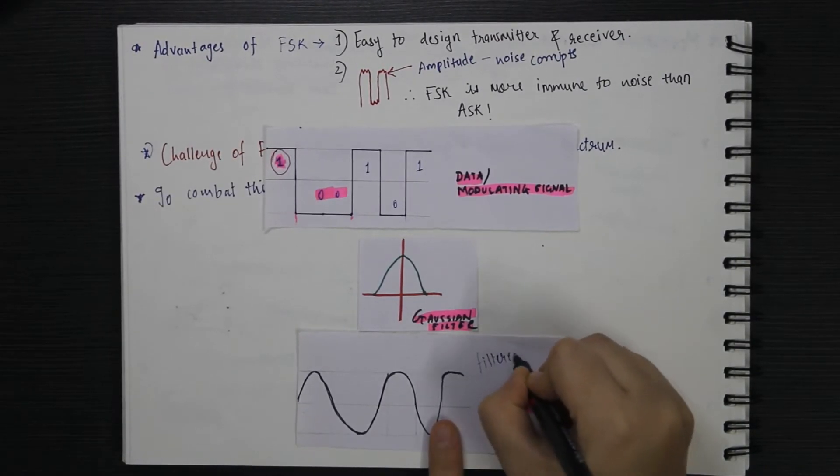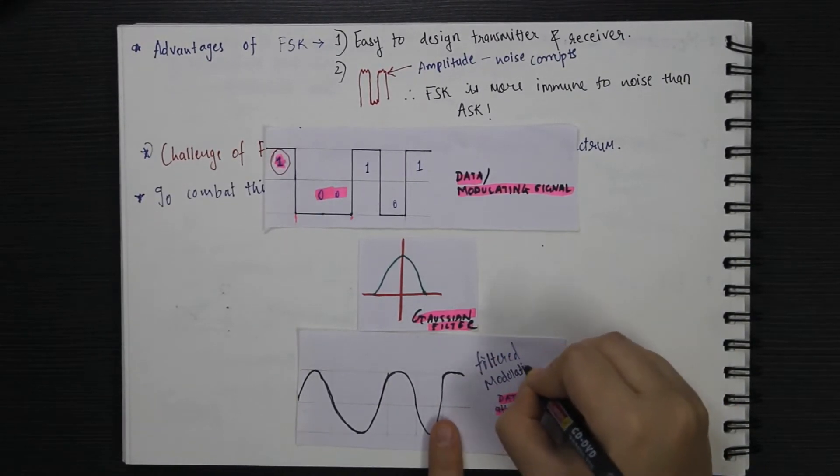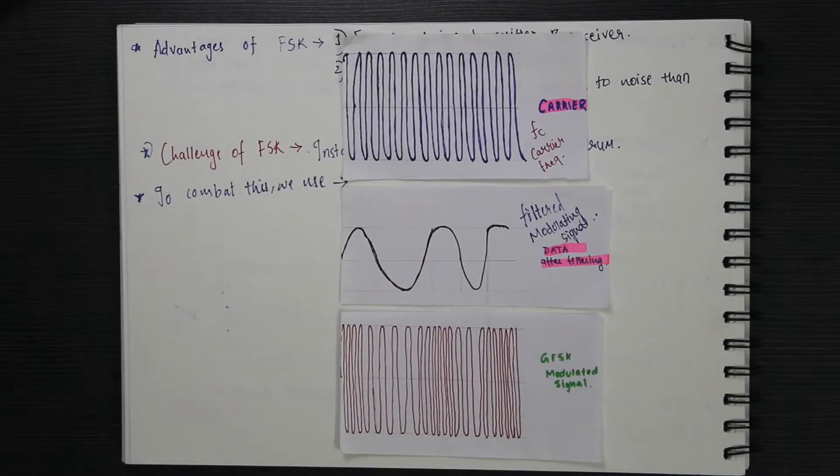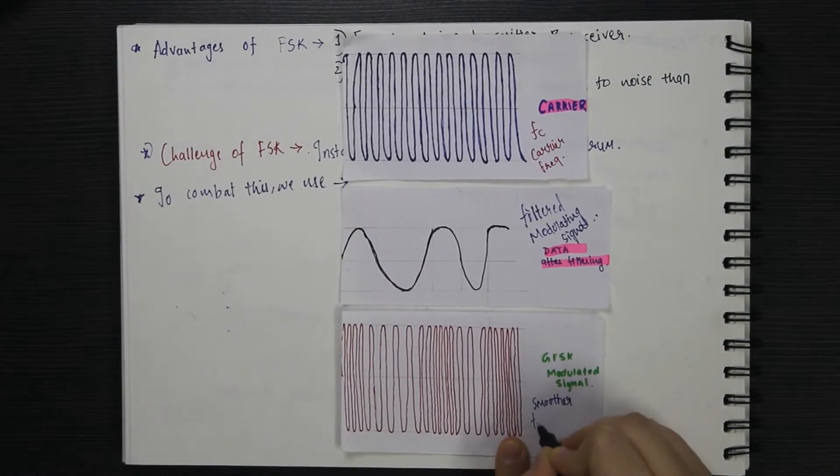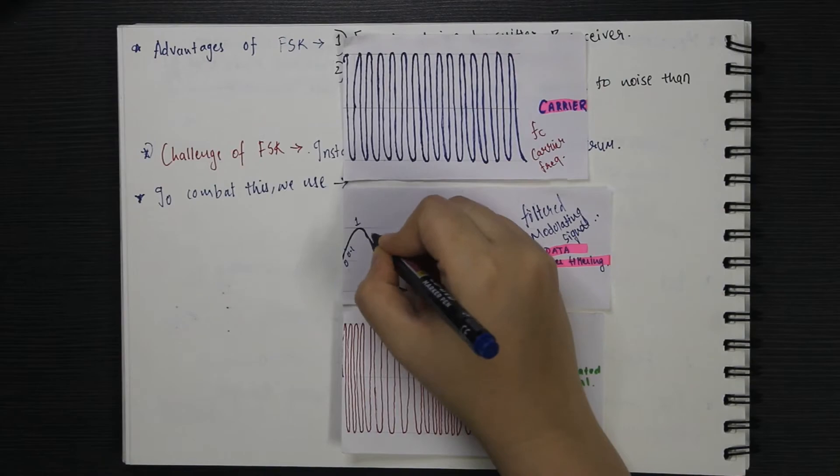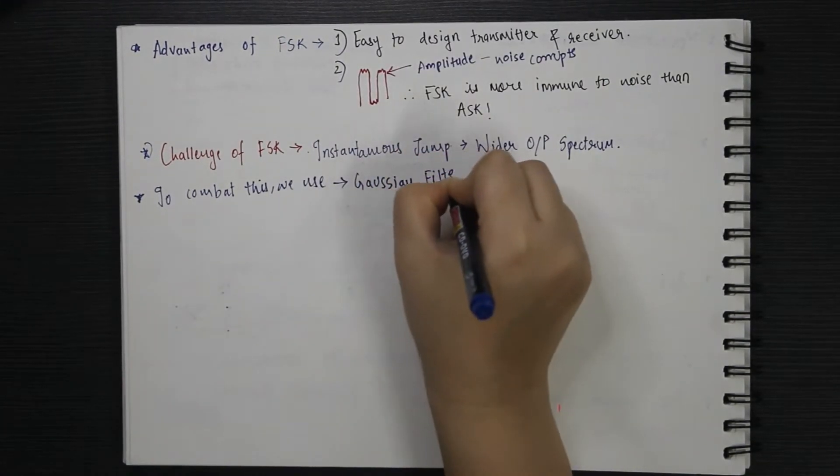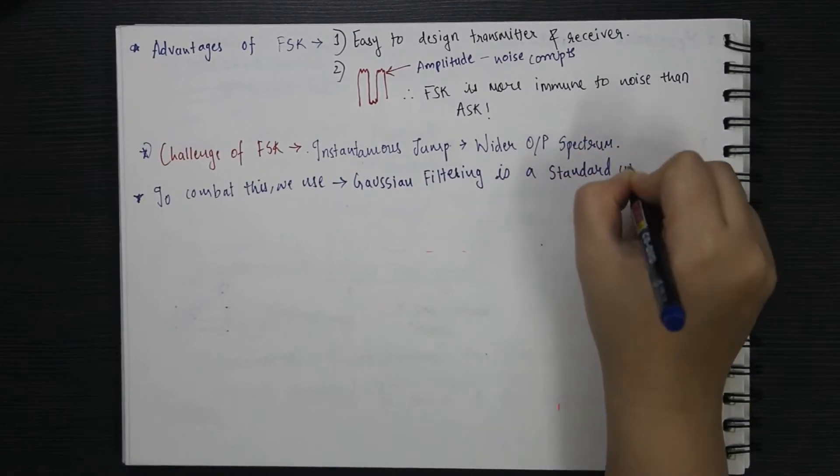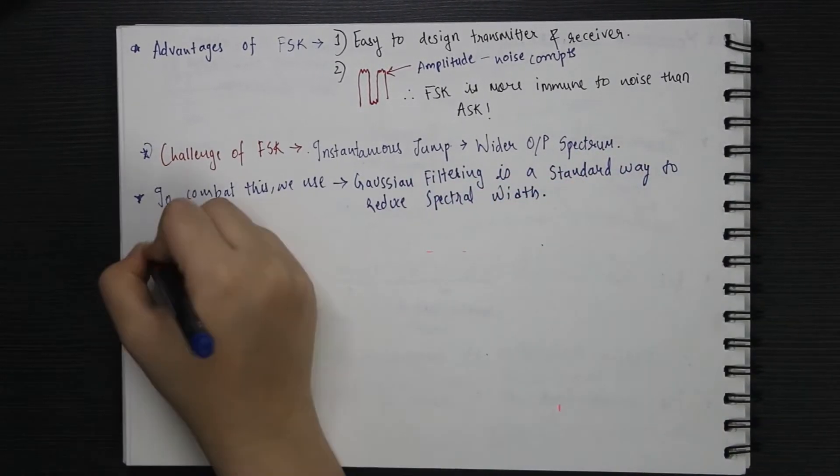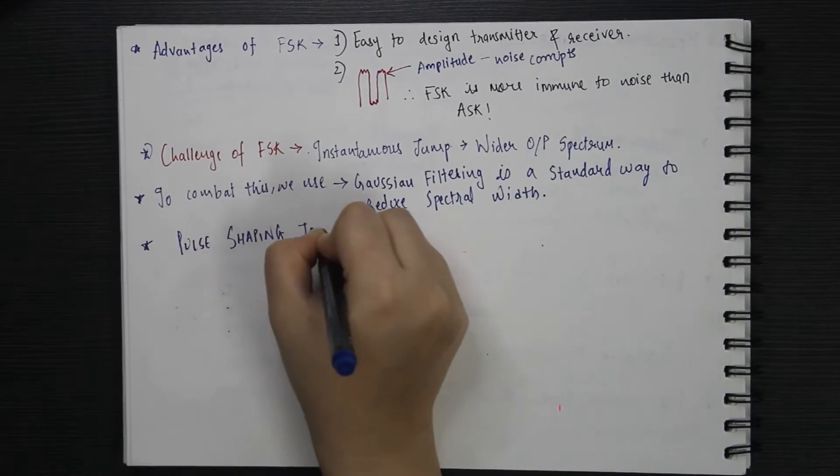To combat this problem, we filter the modulating signal using a Gaussian filter. Then, this filtered signal modifies the carrier signal. Due to this, the resulting transitions are gradual and smoother. Thus, Gaussian filtering is a standard way to reduce the spectral width and it is often referred to as pulse shaping technique.